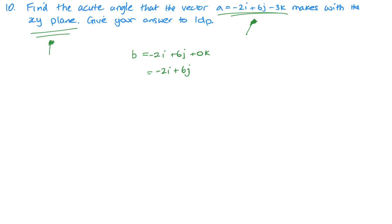That way we've basically got a triangle. So we'll have our vector minus 2i plus 6j minus 3k here.